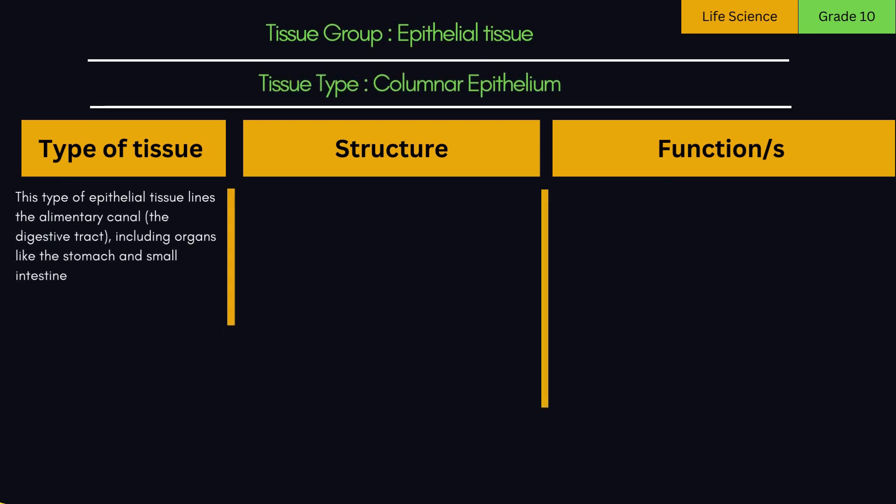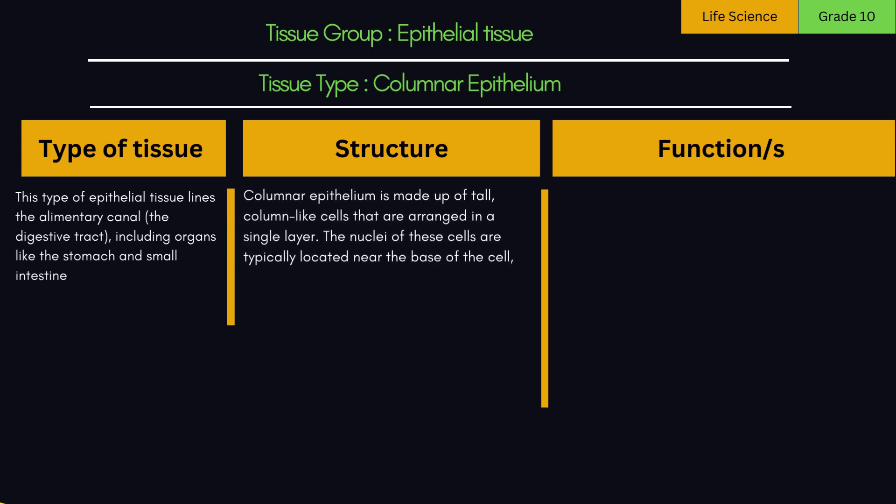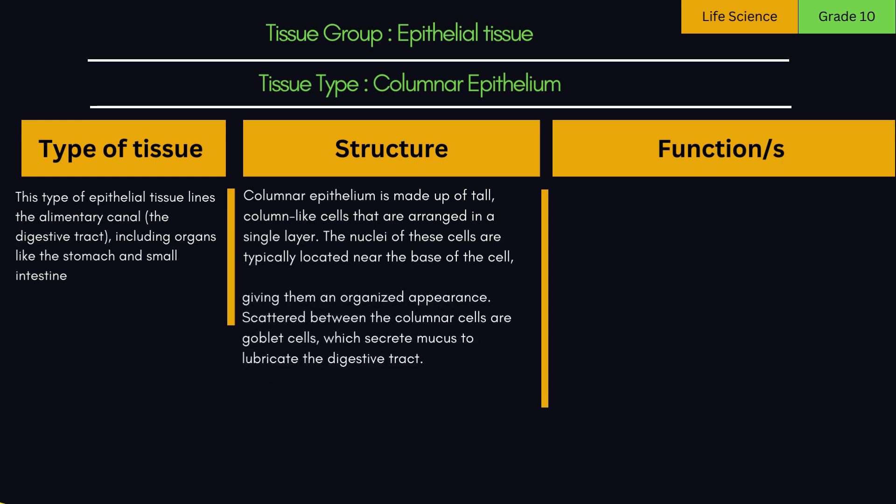B. Columnar epithelium. This type of epithelial tissue lines the alimentary canal, the digestive tract, including organs like the stomach and small intestine. Columnar epithelium is made up of tall, column-like cells that are arranged in a single layer. The nuclei of these cells are typically located near the base of the cell, giving them an organized appearance. Scattered between the columnar cells are goblet cells, which secrete mucus to lubricate the digestive tract.